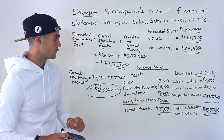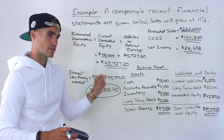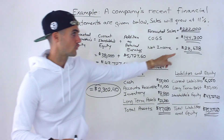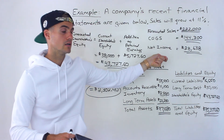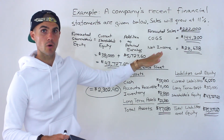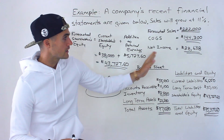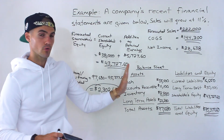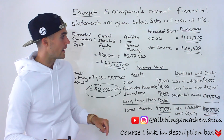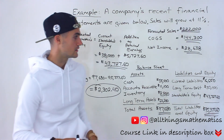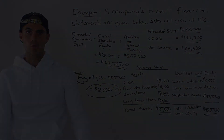And that's pretty much it for the question. Just be careful with these questions — with that interest expense when calculating the forecasted net income. In this case we were able to forecast it directly, but the next question on the website will have interest staying constant, so the net income won't change in proportion to sales and we'll have to do a more manual calculation to get that amount.